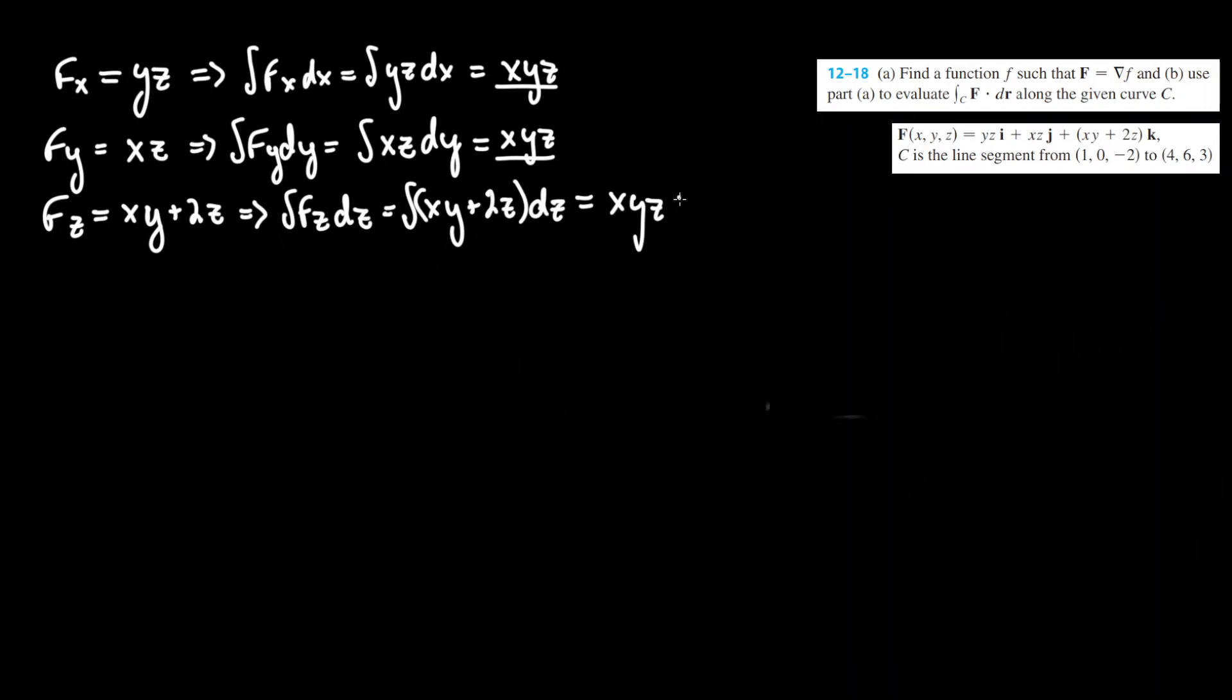Lastly we take the sum xy plus 2z with respect to z, and the integral of that is xyz, but this time it changes a little bit. Now we have an integral of 2z dz which is just z squared, because 2z squared over 2 simplifies to z squared. Now that we have each dimensional component and its respective integral, we can take the parent function f. I'll label that as capital F equal to xyz, and you can see that repeats, so we don't need to say that twice, plus z squared.